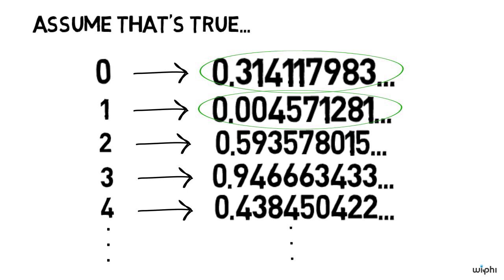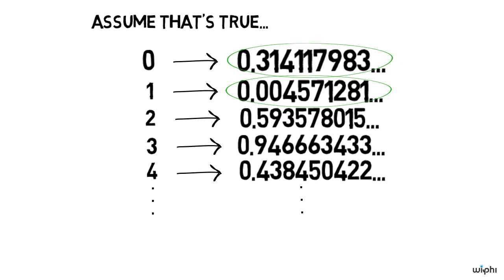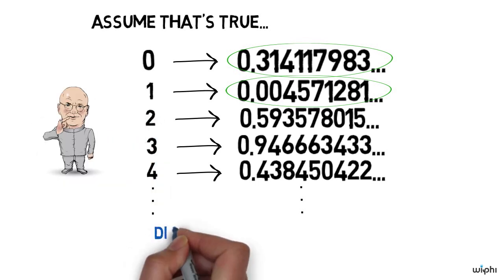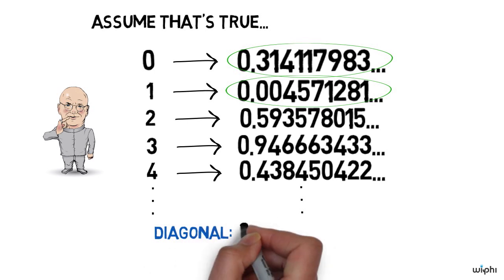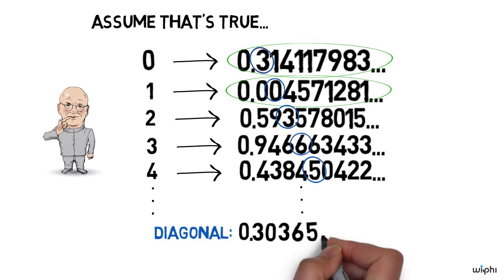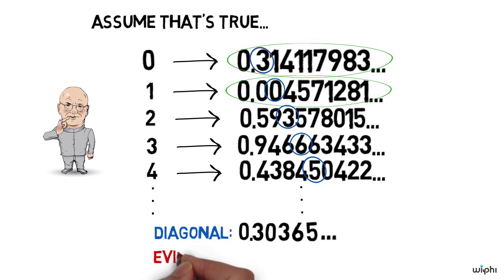Now what we're going to do is use our list to create an evil number. First we consider the diagonal, which is the result of writing 0-point and then the sequence of digits we get from this diagonal. And once we have the diagonal, we define its evil twin. The evil twin of the diagonal is the number you get by writing a 7 whenever the diagonal had a 3, and writing a 3 whenever the diagonal had anything other than a 3.